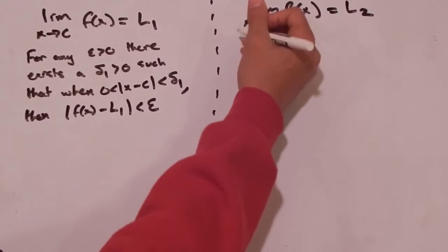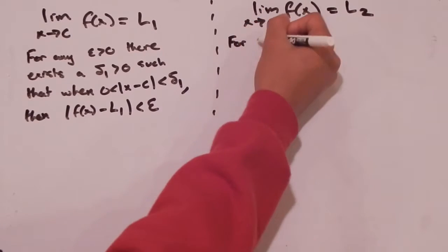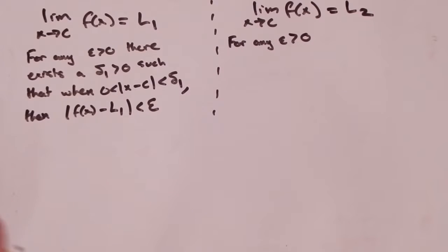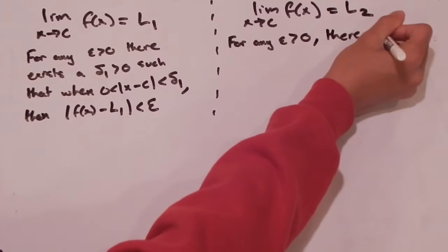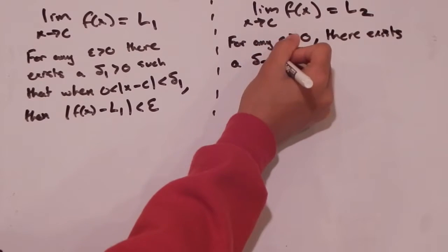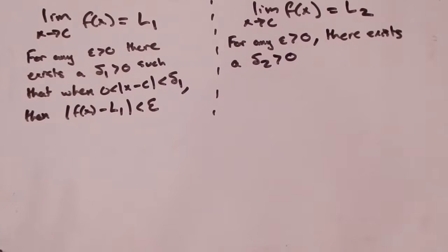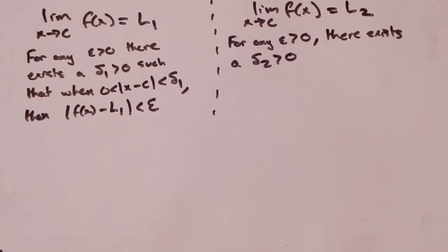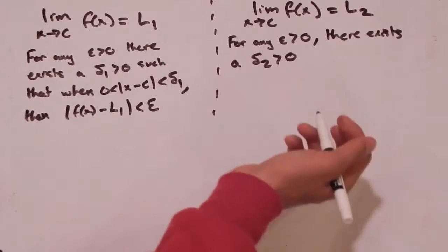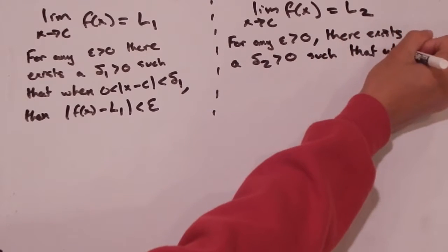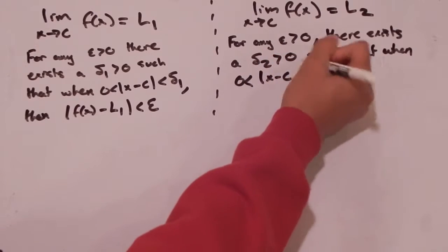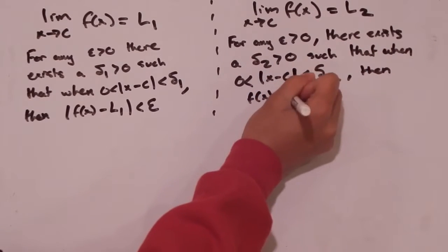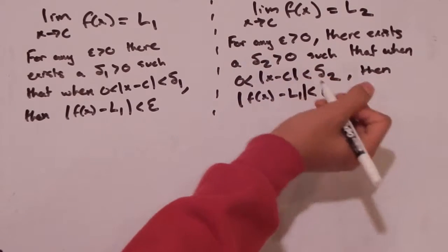Now let's write down what we know based on the second limit. For any epsilon greater than 0 — and I'm making a conscious decision to make these two epsilons the same; I'm allowed to do that because I can pick any epsilon value I want — there exists a delta sub 2 greater than 0. Just because I pick the same epsilon doesn't mean they'll have the same delta. So I really don't know what these two delta values are, I just know that they exist, such that when 0 is less than the absolute value of x minus c, which is less than delta 2, then the absolute value of f of x minus L2 is less than epsilon.